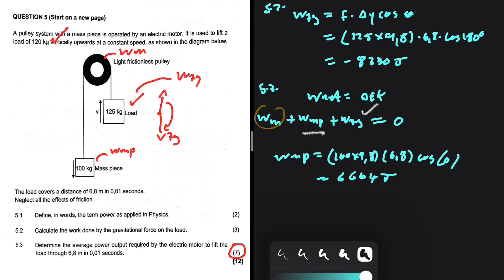Now if we substitute back in our equation, the work done by the motor plus 6664 minus 8330 equals zero. So the work done by the motor equals 8330 minus 6664. You're gonna get 1666 joules.